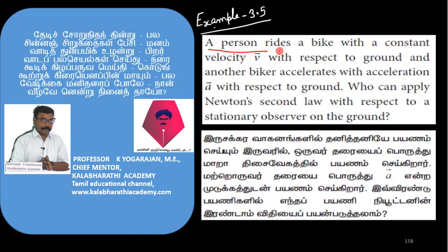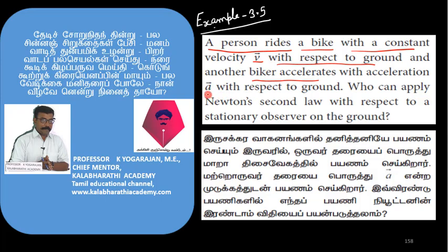A person rides a bike with constant velocity v with respect to the ground, and another biker accelerates with acceleration vector a with respect to the ground.